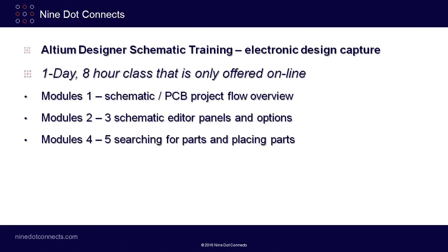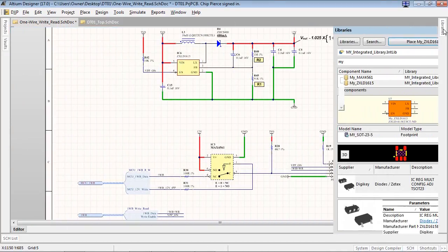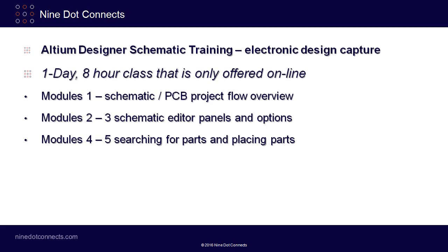In modules four and five, we'll teach you how to search for existing parts that Altium has already made. In module four, we show you how to look for parts in the Altium content vault. And in module five, we'll use the library panels to search and place down parts that may exist in your own corporate libraries. Many library tips and tricks will be presented throughout the course to give you information that can only be gained through years of experience with the tool.